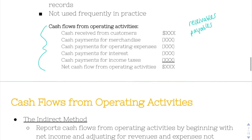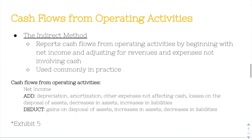Instead, you use what's called the indirect method. The indirect method reports cash flows from operating activities by beginning with net income. Then we adjust for revenues and expenses not involving cash. There are a lot of things that don't involve cash right away that we couldn't account for with the direct method. So for that reason, we use the indirect method, and it is commonly used in practice.